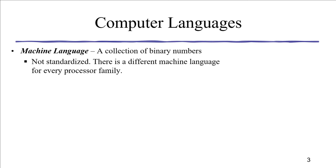There are three types of computer languages. First is machine language, which is a collection of binary numbers — because the hardware of a computer operates with 0s and 1s. Binary digit instructions are given directly to the CPU to perform particular operations. This is the first programming language from the first generation of computers. It is not standardized; there are different machine languages for every processor family, such as Intel and Motorola. You can consider machine language as like a mother tongue.